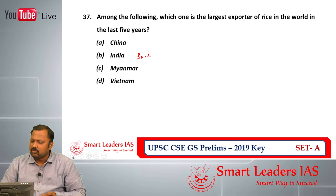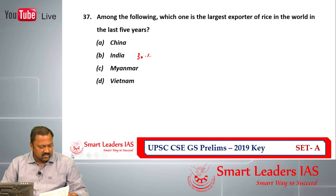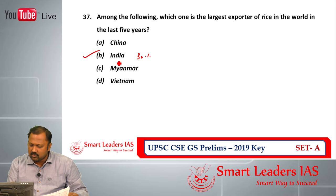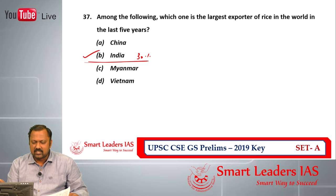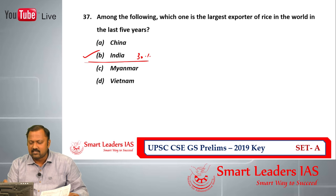Question number 37: among the following, which is the largest exporter of rice in the world in the last 5 years? India has rice exports of close to 30%. The next is Thailand at 22.7%, Vietnam 9%, Pakistan 8.2%, and the United States further down. Among the given options in the examination, India is the answer at close to 30-31%. The second largest, Thailand, is not given as an option, so there is no confusion. Question number 37 answer is B.